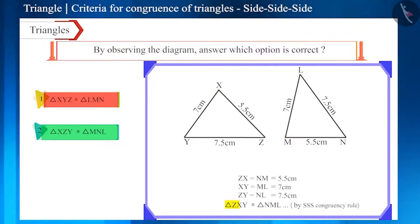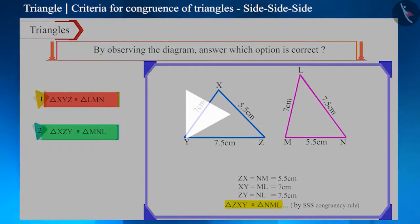For example, triangle ZXY is congruent to triangle NML. We can write more names like this. You may pause the video and try to write more names.